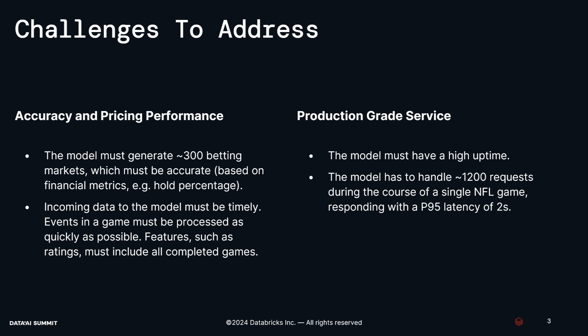When we say accurate here, we're mainly talking about financial metrics — how much money are these markets making. The interesting thing about the sports betting domain is that customers have an opportunity to make money directly on your predictions, so if your model is wrong, you can lose a lot of money very fast. Another consideration is that incoming data to our model has to be timely. When events are happening in a real game we want them processed as quickly as possible to make sure the prices we're offering aren't stale. Features that are slower moving, such as player and team ratings, still have to be up to date through the last completed game.